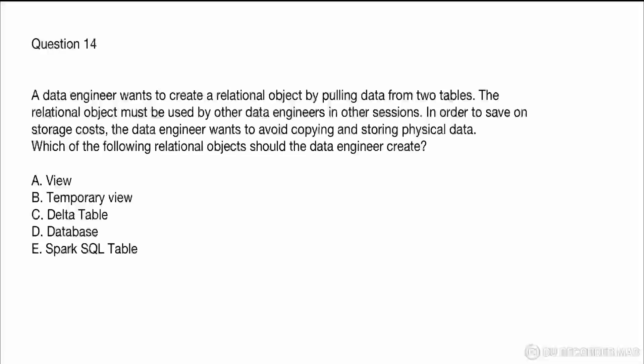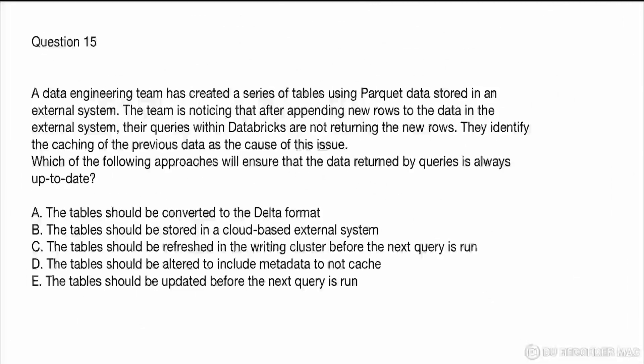Question 14: A data engineer wants to create a relational object by pulling data from two tables. That object must be usable by other data engineers in other sessions, and the engineer wants to avoid copying and storing physical data. Option A is a view — it doesn't hold data, just metadata. Option B is a temporary view — it can only be used in the same session. Option C is a delta table — it stores data physically. A regular view is the right answer: it can be used across sessions and doesn't store data physically.